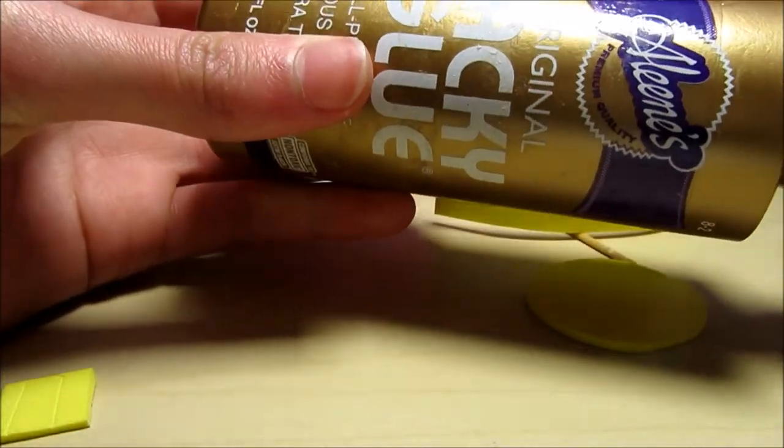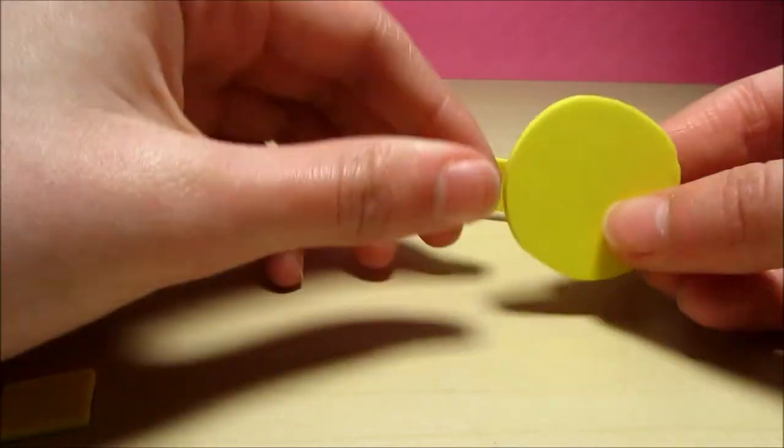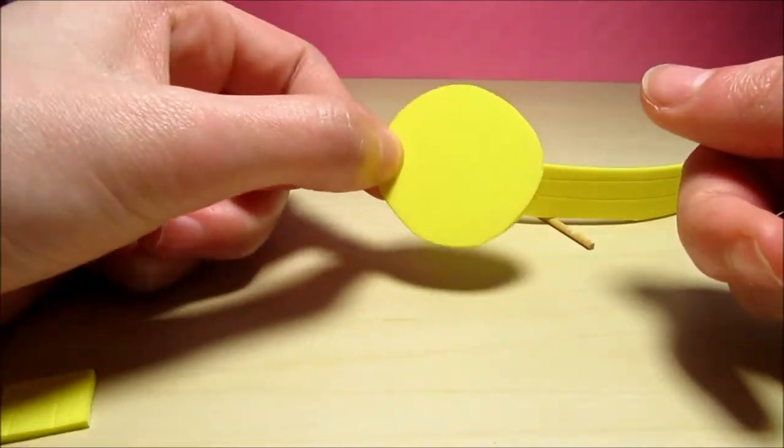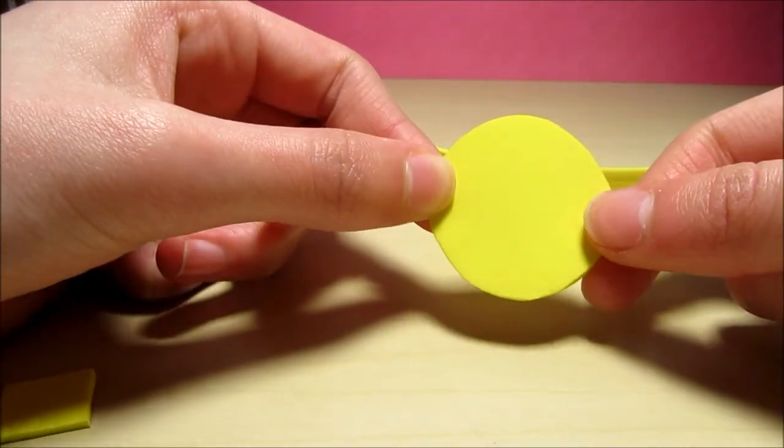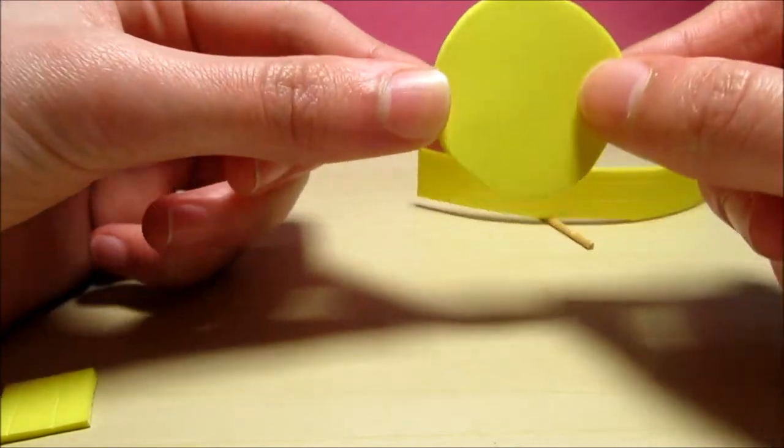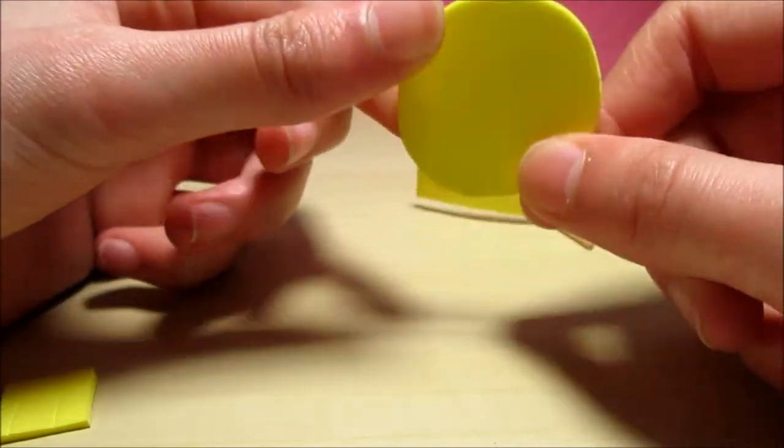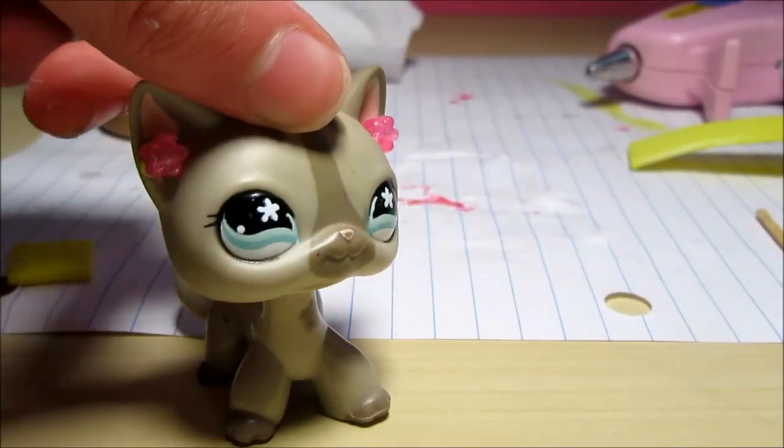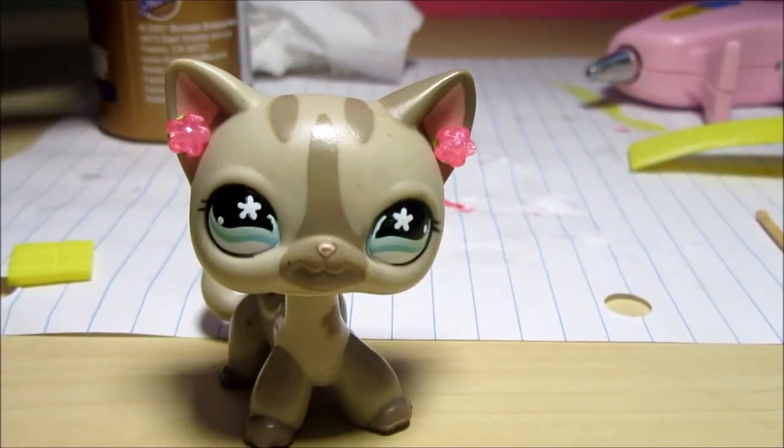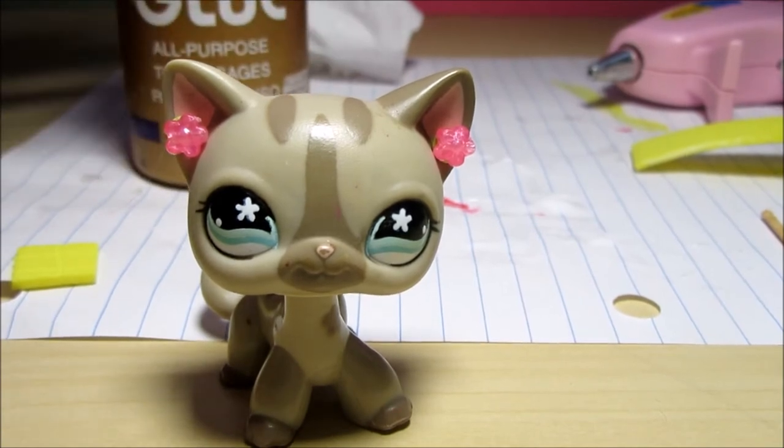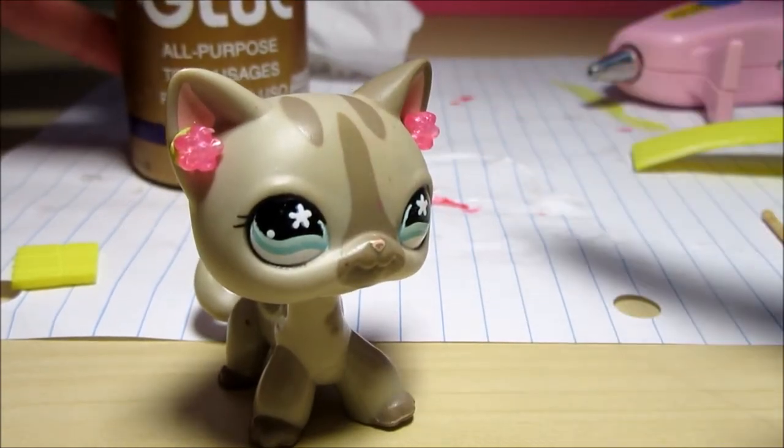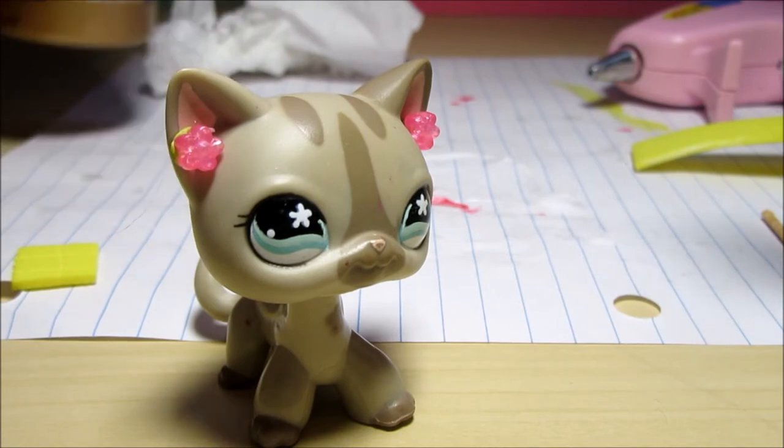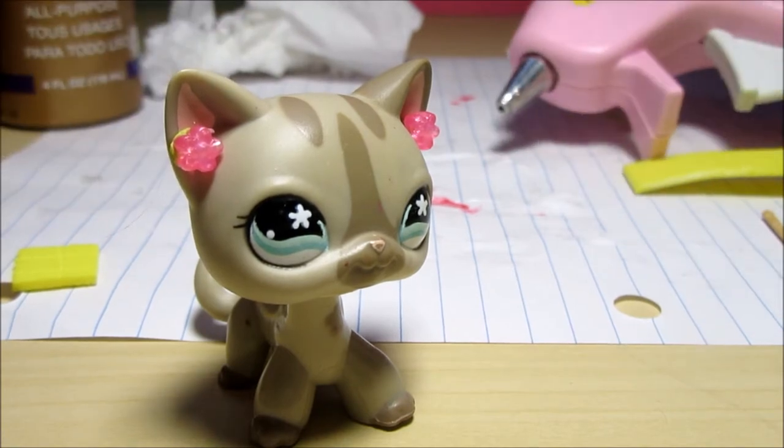So now you can take your tacky glue or you can use a hot glue gun depending on how fast or quickly you want it to dry. But if you are using a hot glue gun you do want your parents' supervision because you're dealing with a hot object. For those of you who are wondering what glue I use, I like to use tacky glue, but on this particular project it does not work very well, so I'm going to have to use hot glue.